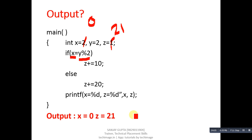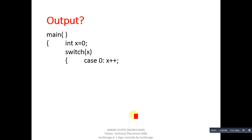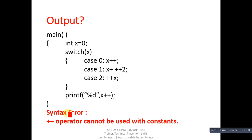This is another code segment. Here x is 0, then switch contains x, then three cases 0, 1, and 2 are here, and then printf will print x plus plus. Now check the output. Here syntax error will be displayed: plus plus operator cannot be used with constants.